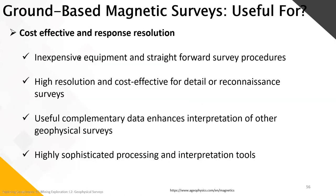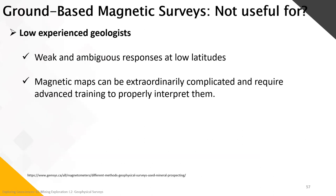What is magnetic surveying useful for? It is cost-effective with high response resolution — inexpensive equipment and straightforward survey procedures. Higher resolution and cost-effective for detailed or reconnaissance surveys. Very useful as complementary data enhancing interpretation of other geophysical surveys. Highly sophisticated processing and interpretation tools are very useful to geologists. The one thing to be aware of: for low-experience geologists, magnetic maps at low latitudes can have weak and ambiguous responses that are very complicated and require advanced training to properly interpret.